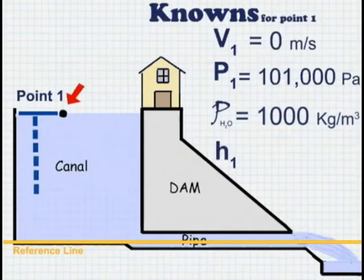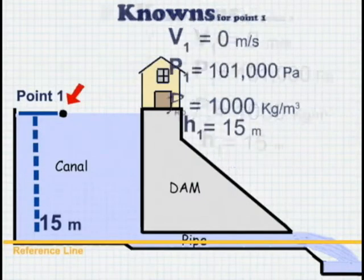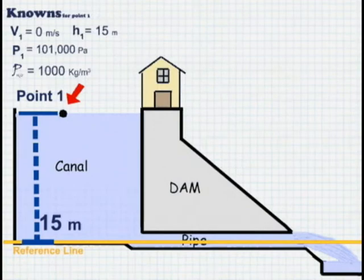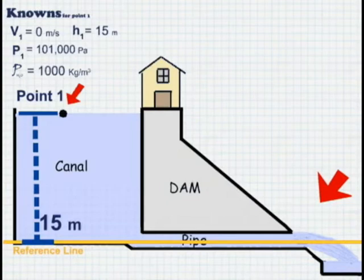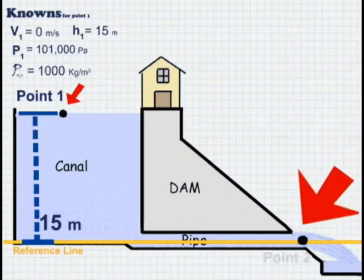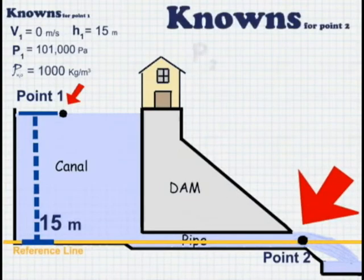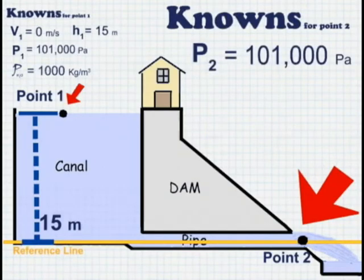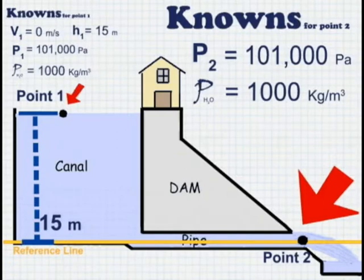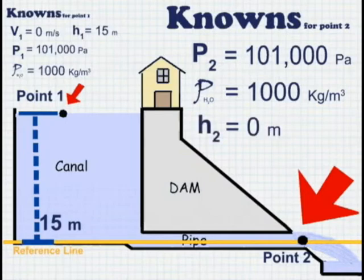Let's pretend we already know that the water is 15 meters deep. Our second point is a more obvious choice — we need to place it where we need our information. So point two goes right at the exit of the pipe where the water is coming out. We still know the static pressure because we aren't underwater, and we still know the density because the density of water doesn't change, even under pressure. Our second point is right on the reference line, so H2 is zero. The only thing we don't know is velocity — but that's why we are here.